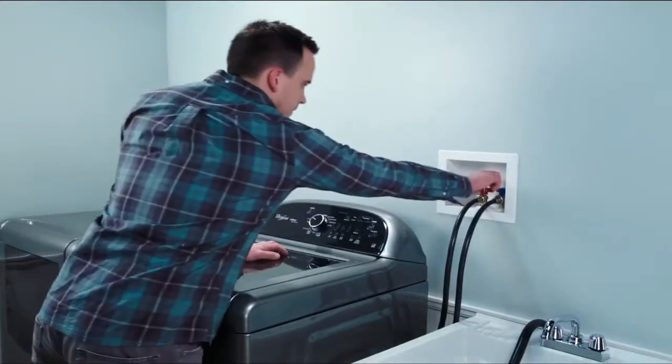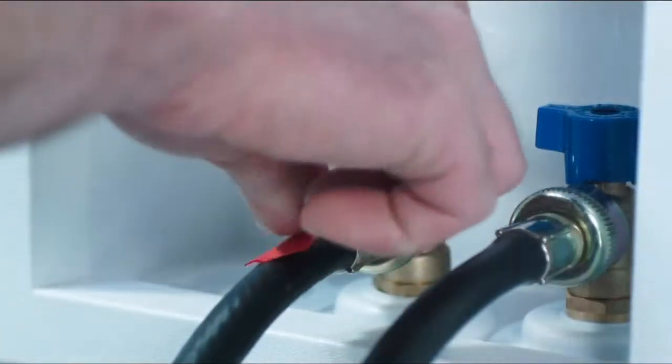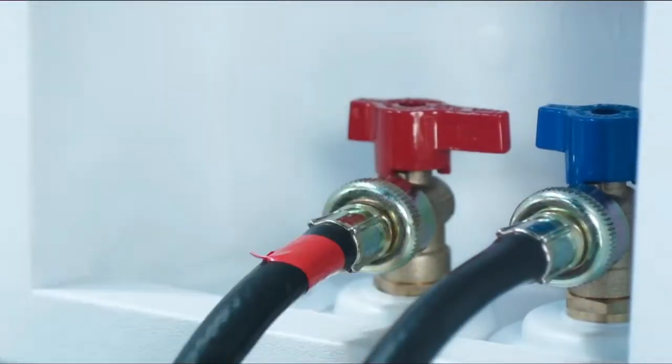Simply shut off the hot and cold valves that supply water to your washing machine. Be sure to mark the hoses so you remember which hose goes to which valve.